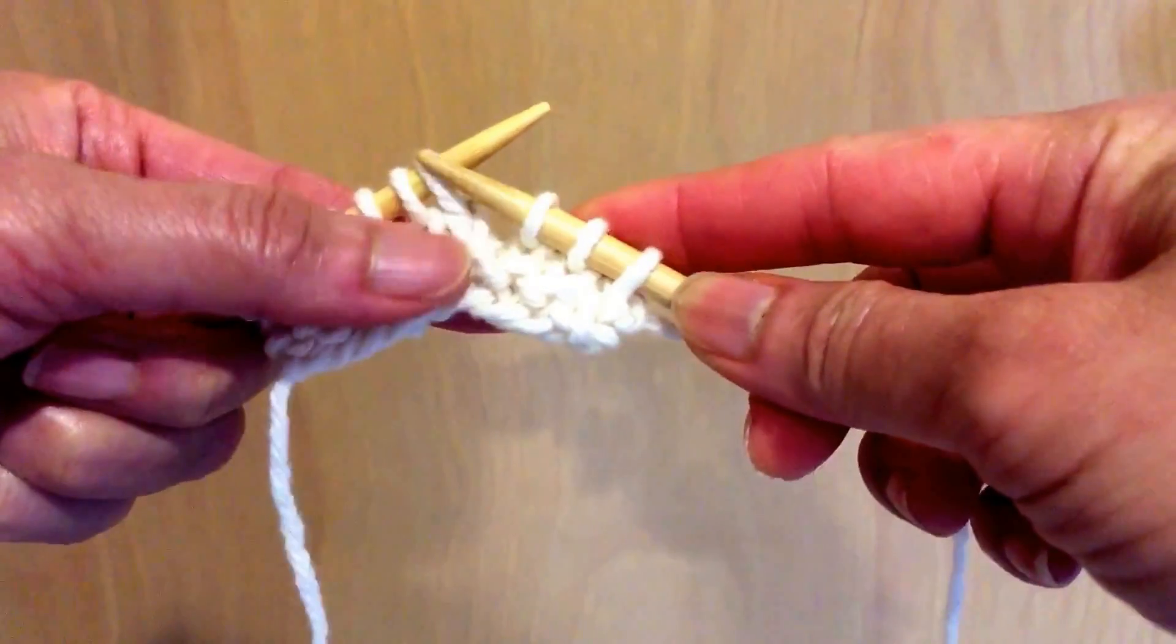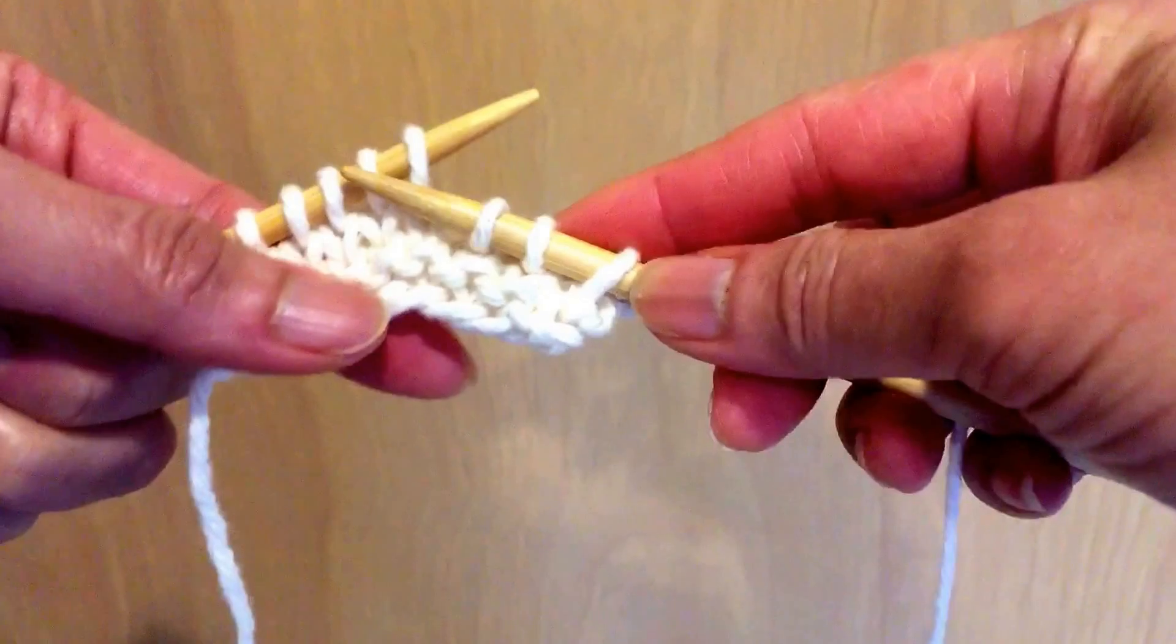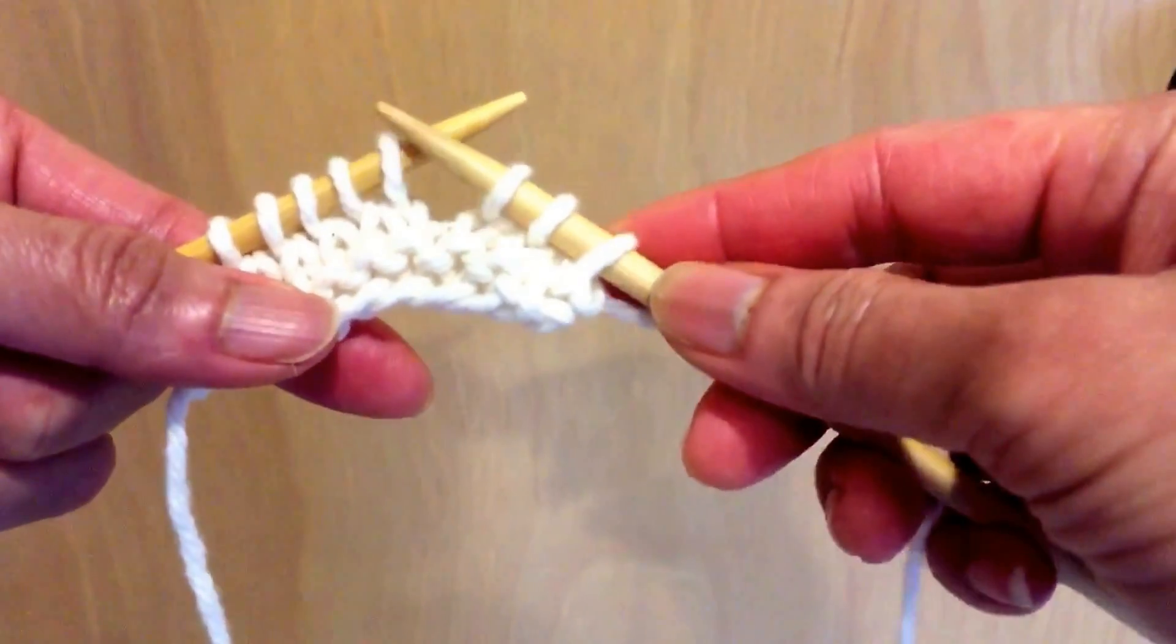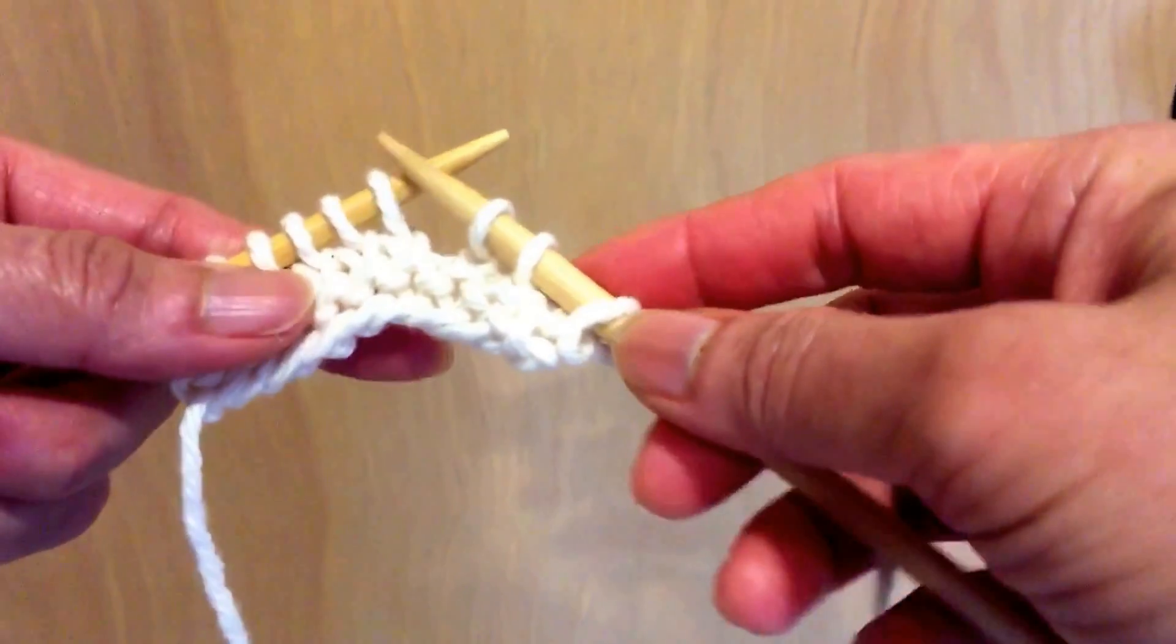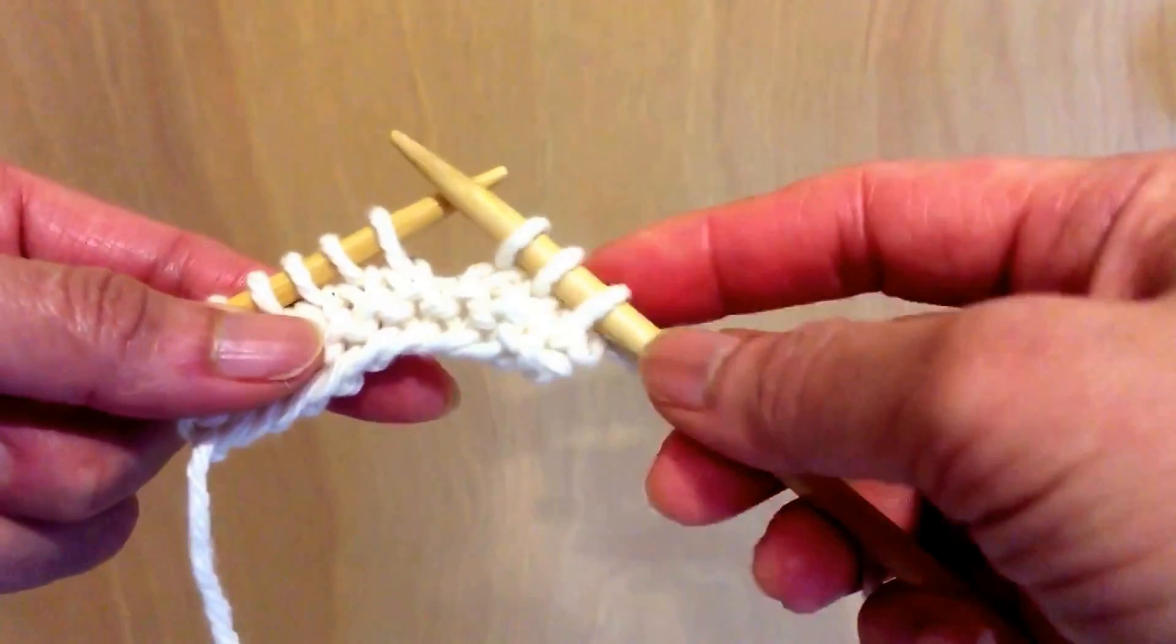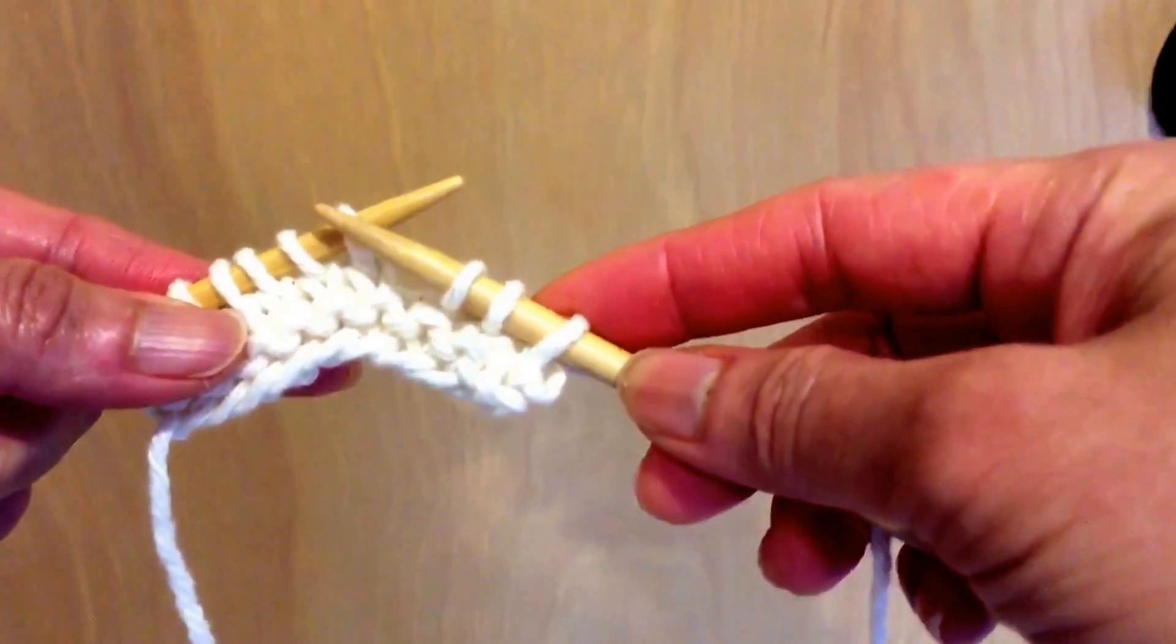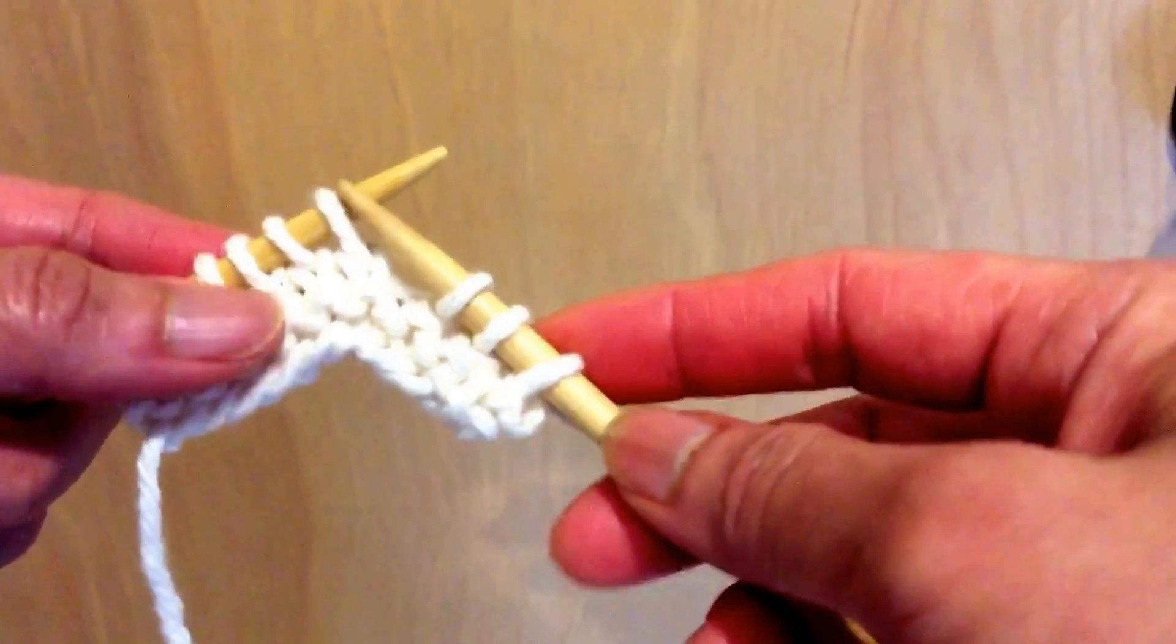I received a question this morning regarding the pattern that said K1, P1, K1 into the next 2 stitches. So how you do that is now I'm at the point where I'm going to knit 1, purl 1 and knit 1 into the stitch. So here we go.